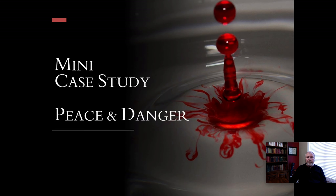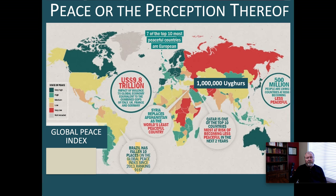Let's look at a mini case study on peace and danger. What about peace or the perception thereof? Seven of the ten most peaceful countries in the world are European nations, at least by virtue of perception. The impact of violence to the global economy is $9.8 trillion — equivalent to the combined gross domestic products of Italy, the United Kingdom, France, and Germany.